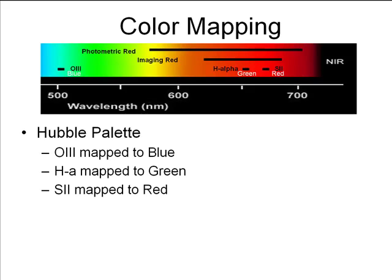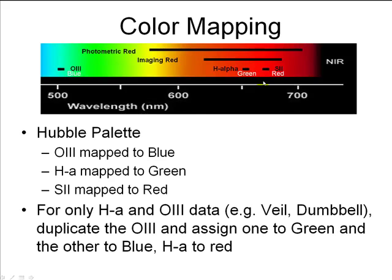Before we get too far into the tutorial, I'd like to point out that if you just have HA and O3 data — a great dataset for objects like the Veil, supernova remnants, or the Dumbbell planetary nebula — you can duplicate the O3 data, assign one copy to green and the other to blue, keep HA to red, and you'll get a very natural-looking color with all the high contrast that narrowband filters provide. But for this tutorial, we're going to go with tricolor narrowband imaging of all three emission lines.